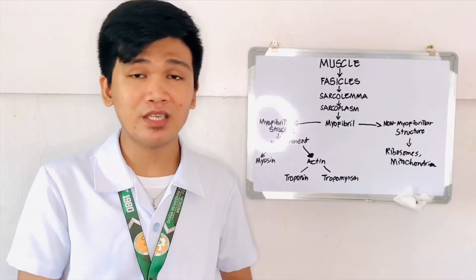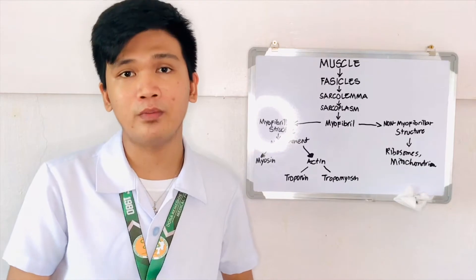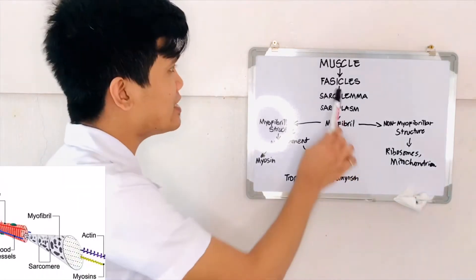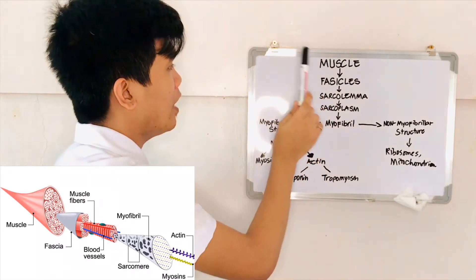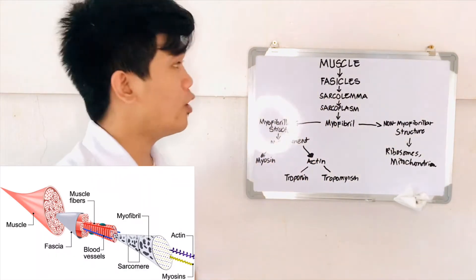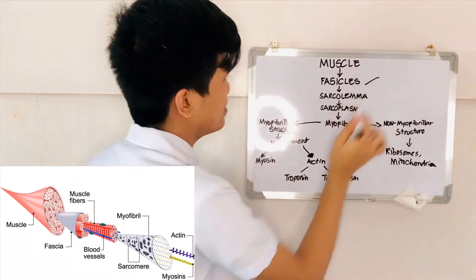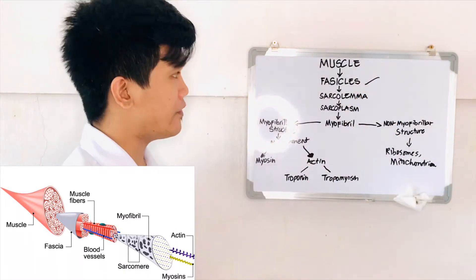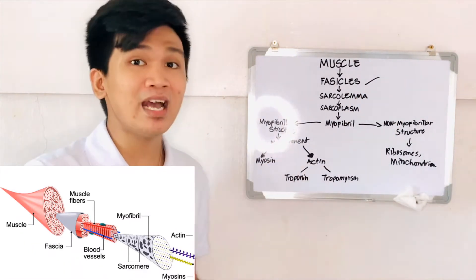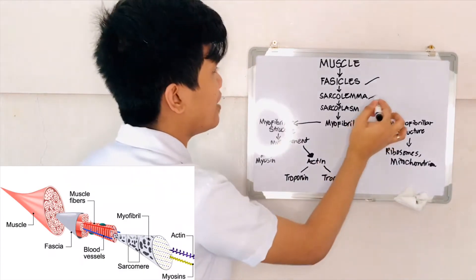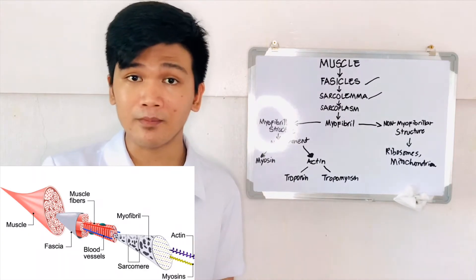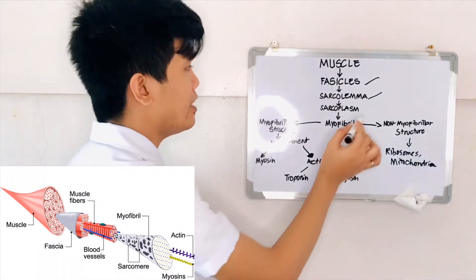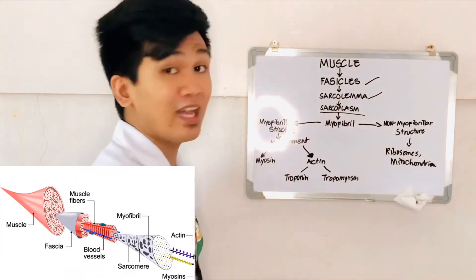And then now let's proceed to composition of muscle fiber. So let's say this one is a muscle. Each muscle is made up of a group of muscle fibers called fascicles. And then each muscle fiber is enclosed in a cell membrane called sarcolemma. And then just like any other cells that are made up of cytoplasm, in a muscle cell it is called sarcoplasm.